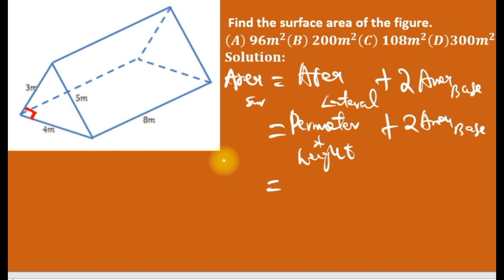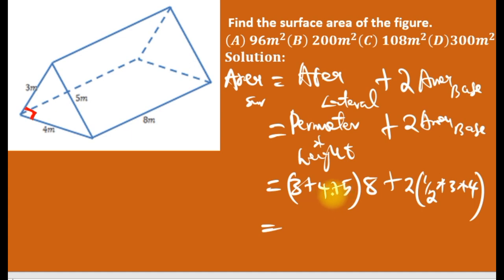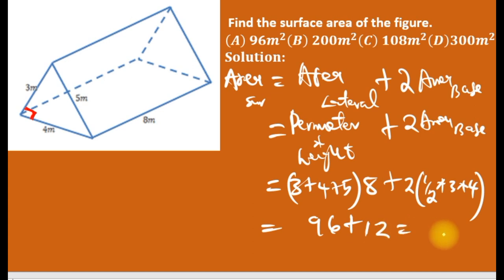The perimeter of the base is 3 plus 4 plus 5, times the height which is 8, plus two times half base times height, where base is 3 and height is 4. So: 3 plus 4 plus 5 is 12, times 8 is 96, plus 12 equals 108. So our answer is C.